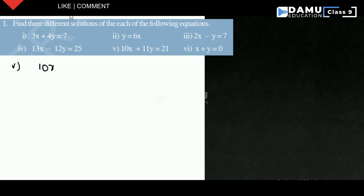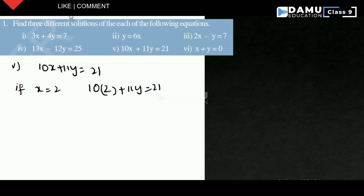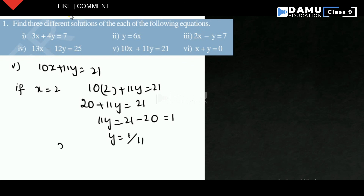For the third solution of 10x + 11y = 21, if x = 2, then 20 + 11y = 21, so 11y = 1, giving y = 1/11. The solution is (2, 1/11).